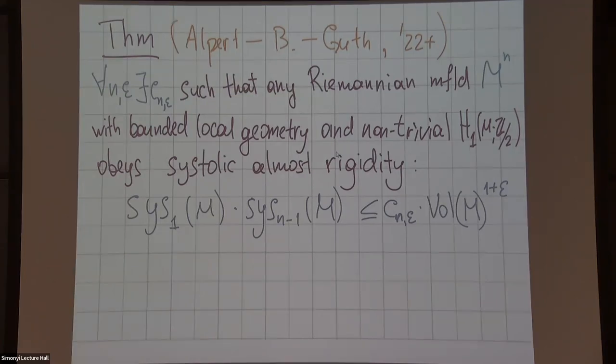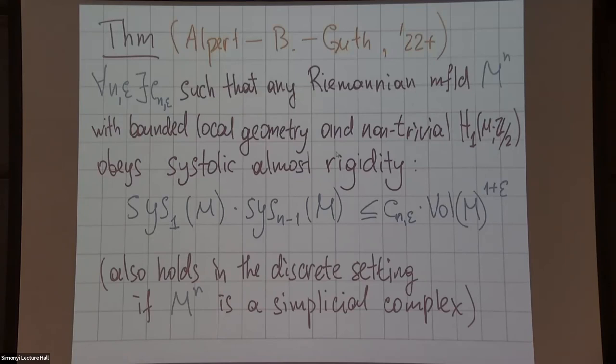Any Riemannian manifold which has bounded local geometry, as long as it has those systoles finite, which is the same as saying it has non-trivial first homology, the product can be bounded from above in terms of the volume plus epsilon. Any epsilon can be chosen, but the constant depends on epsilon. That's the cool result which doesn't hold with Z coefficients. It's cool because it's true in great generality. It's true in the discrete context for any simplicial complex without assuming that your space is a manifold.